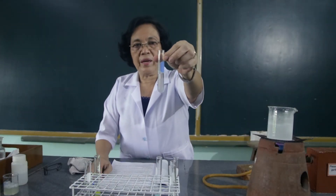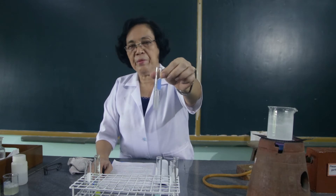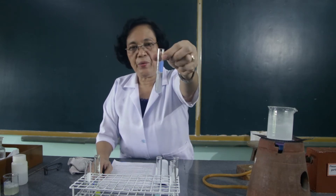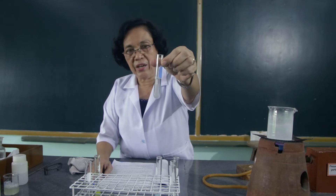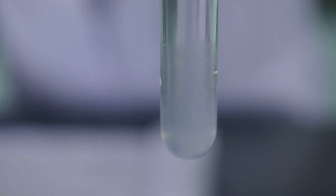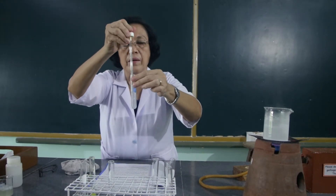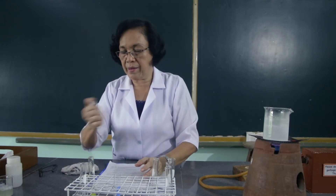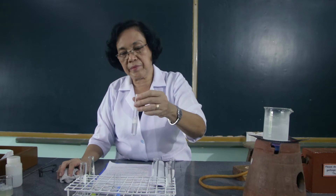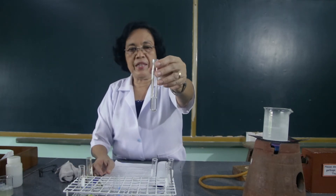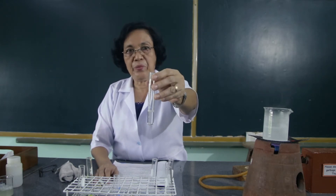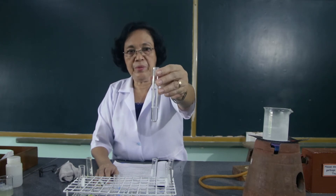This was the precipitate that we formed when the egg albumin was added with the ethyl alcohol and it was set aside for about 30 minutes. With the precipitate that you see at the lower part of the mixture, we are going to dissolve this in water. I want you to observe what happens. This is the precipitate.